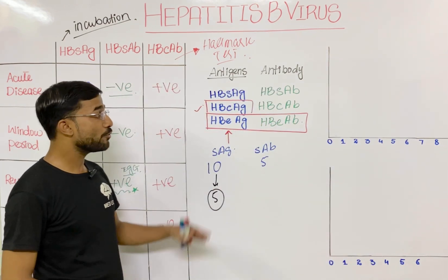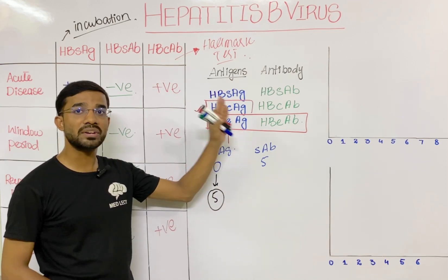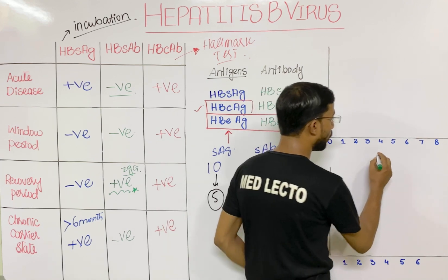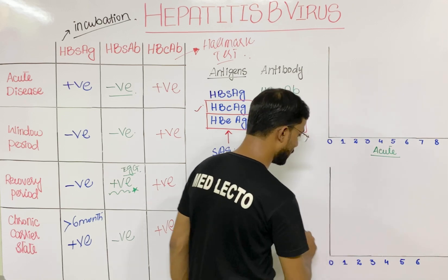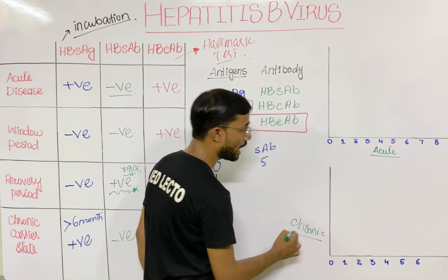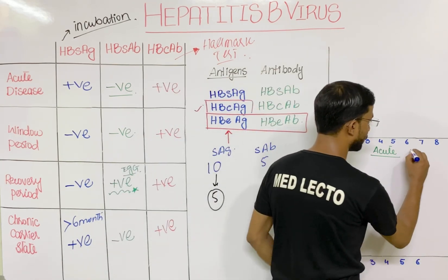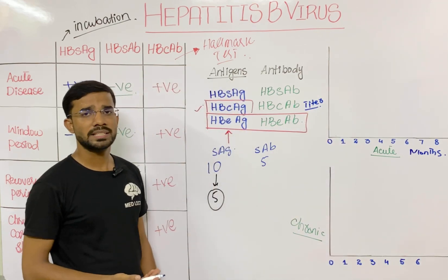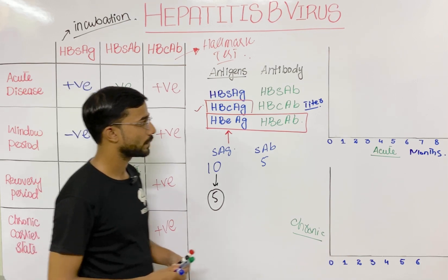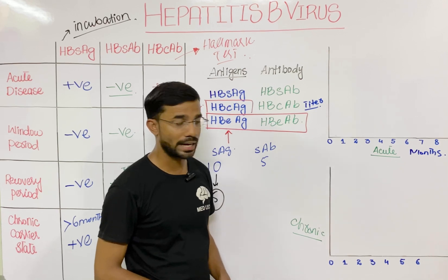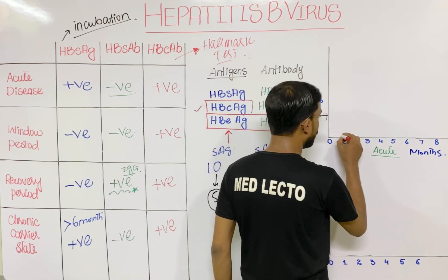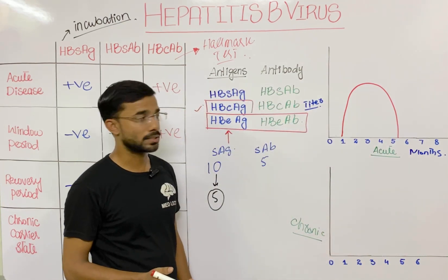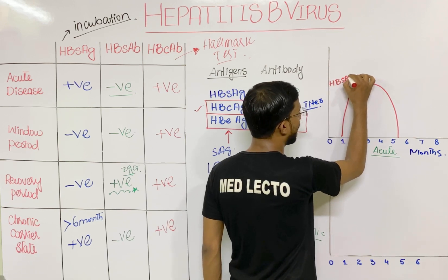To summarize with a graph, we divide into an acute case and a chronic case. On the x-axis we take months, and on the y-axis the titer or concentration of antigen and antibodies. In the acute case, Hepatitis B surface antigen appears at the first month and persists up to around the fifth to sixth month.